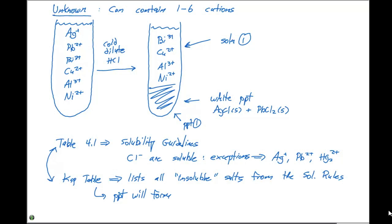You'll notice the KSP table lists a KSP value for mercury chloride. So if mercury were contained in this unknown solution, it would show up in the precipitate. If we had sodium plus ions in our unknown solution, you don't have a KSP value for sodium chloride. So therefore, it would remain an ion in solution.